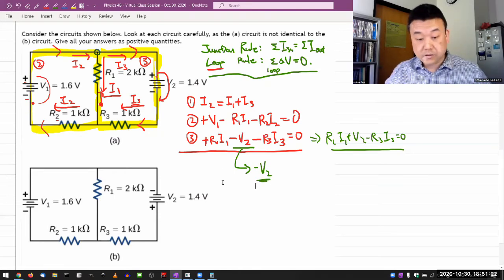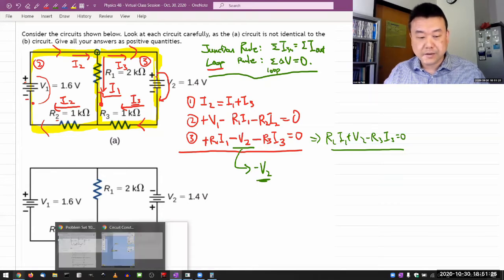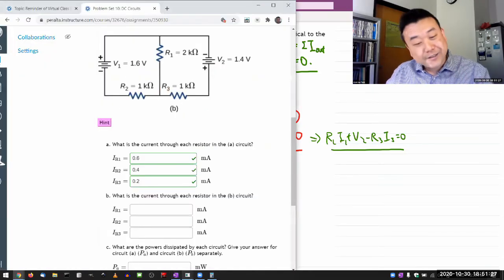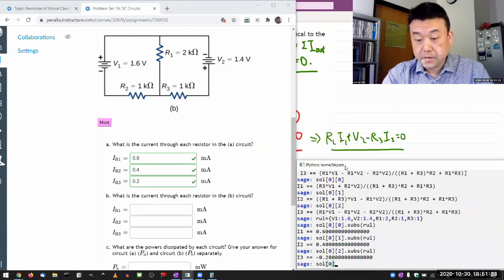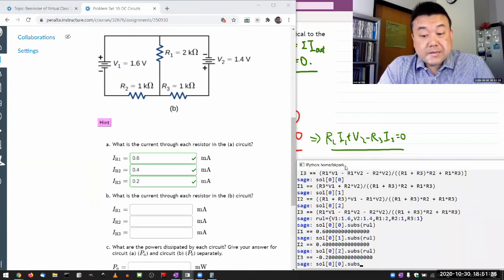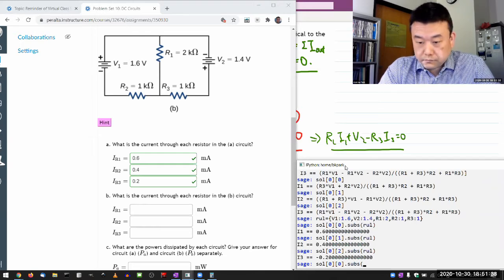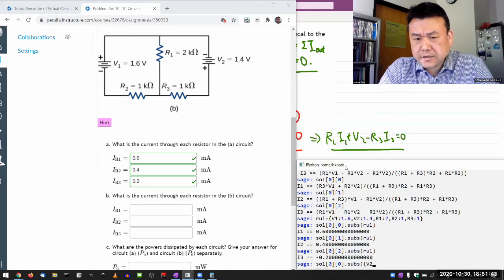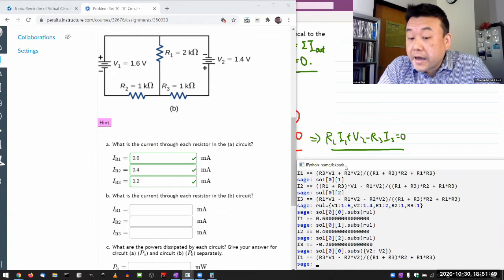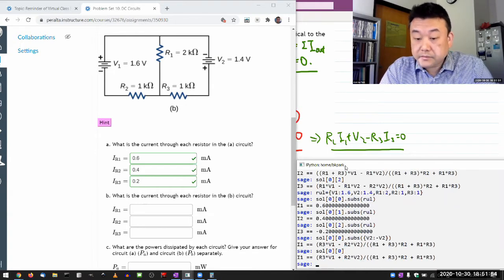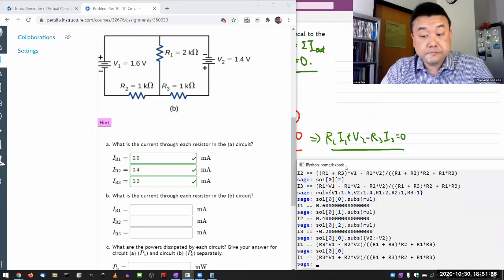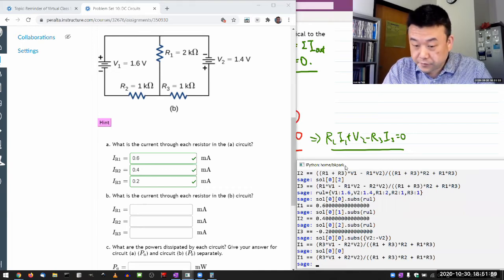So what I think I can do instead of doing all that tedious work all over again, I can simply take the result and replace the symbol V2 with a new symbol minus V2. Like I can do that and compare that with the previous result. And I think that's going to give me the values I want. So really all I have to do is this. So this gets me the equation with that substitution of V2 with minus V2.